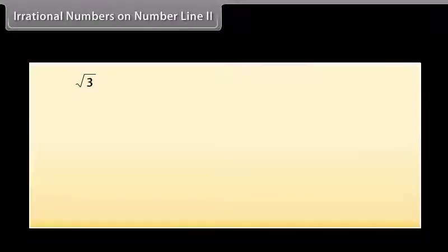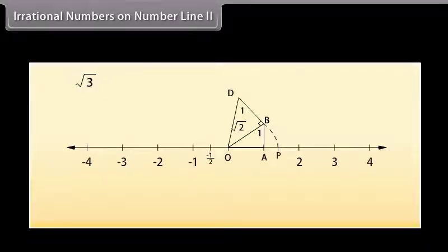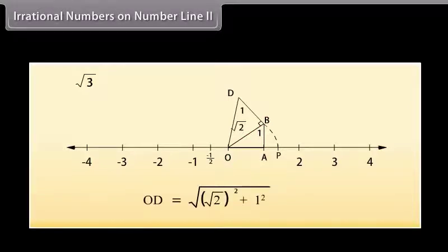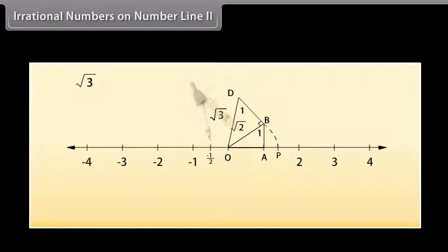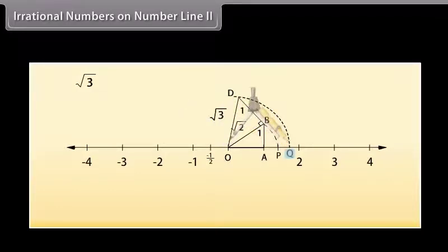Irrational numbers on number line 2. Similarly, to locate square root of 3 on the number line, we will construct BD of unit length perpendicular to OB. Then by Pythagoras theorem, OD = √(√2² + 1²) = square root of 3. By using the compass with center O and radius OD, we will draw an arc intersecting the number line at point Q. Point Q corresponds to square root of 3 on the number line.